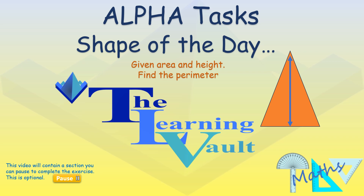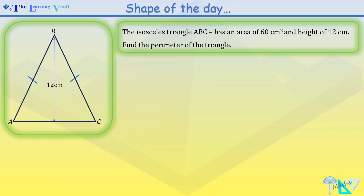Welcome to AlphaTask by the Learning Vault. Shape of the day. The shape of the day is an isosceles triangle ABC of area six centimetres squared and height of 12 centimetres.